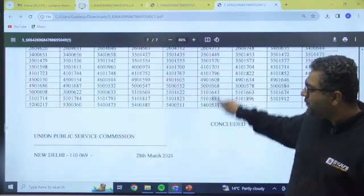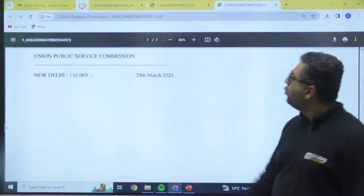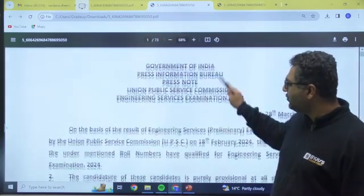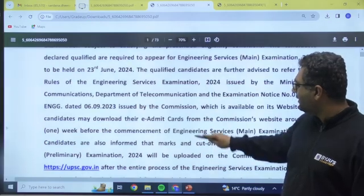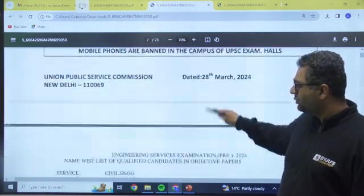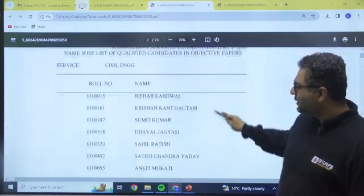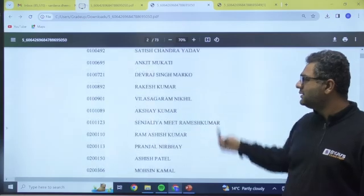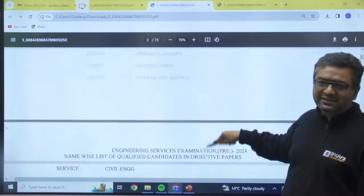This is the roll number-wise list. I also have one more list which is having the names of the candidates. This is a 73-page list. You can see the name of the candidates also. These are the names, like you can see roll number, name, Risha Krishnakad. This is the complete list.